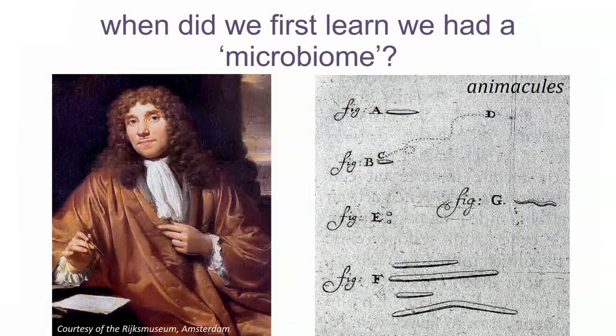This is not a new topic. We actually first learned about the microbiome in the 1600s. This is Anton van Leeuwenhoek, one of the early pioneers of the first microscope. He took a toothpick, scraped it against his teeth — remember, this was pre-toothpaste, pre-toothbrushes, pre-flossing — and looked at the gunk under a microscope. He found all these different little organisms he called 'animacules,' saw them wiggling in different shapes and sizes, and described the first oral microbiome.